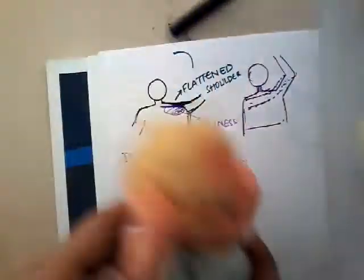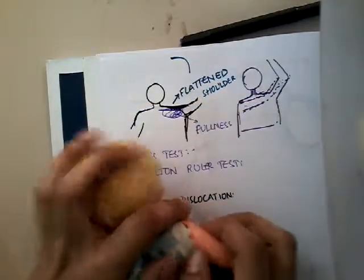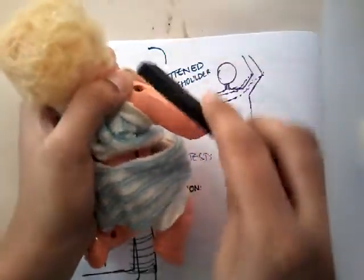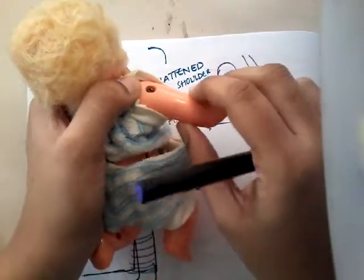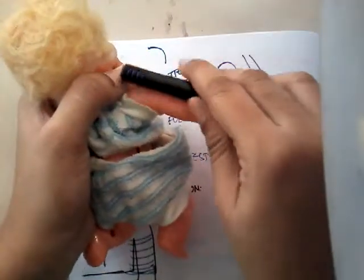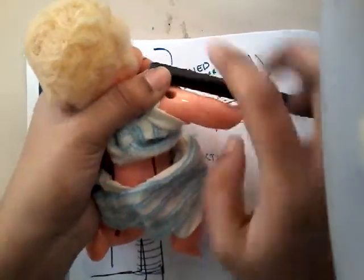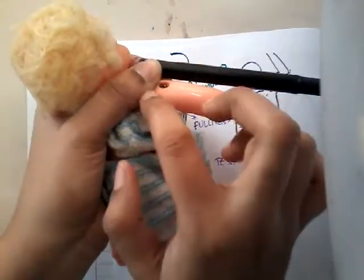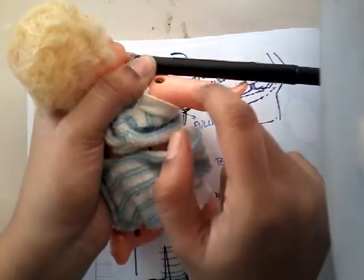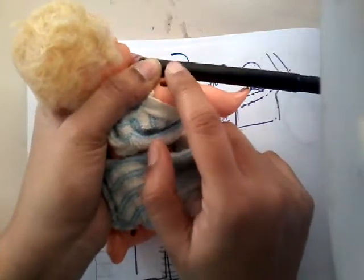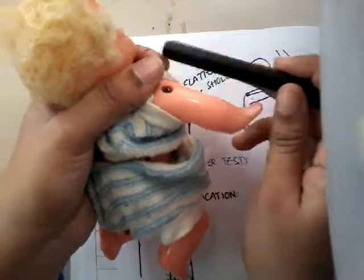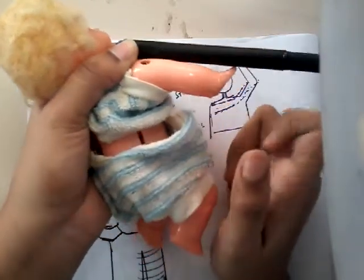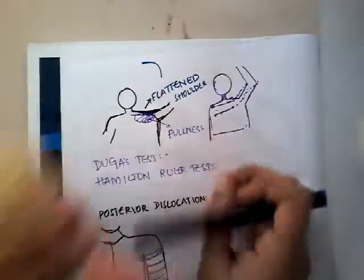In Hamilton's ruler test, we place a small ruler on the lateral side of the arm, touching both the acromion process and the lateral condyle of the humerus. Normally the ruler cannot be placed — it will fall down. But because there is flattening of the shoulder due to dislocation, the ruler remains in its position. That is Hamilton's ruler test.